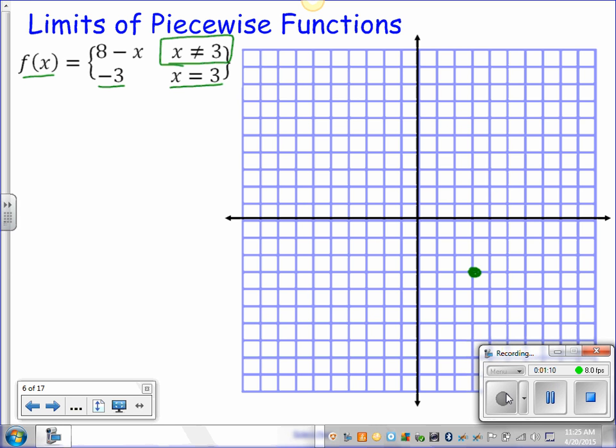This inequality is saying if x doesn't equal three, then we're graphing this, which is a line. It's a line that has a y-intercept of eight and a slope of negative one. Here's my slope of negative one. Here's the thing: when I get to where x is three, this function is not defined. The function is not defined where x equals three, at least not along this line. So I'm going to put an open hole right there in the graph and continue drawing this slope of negative one through the rest of this coordinate plane.